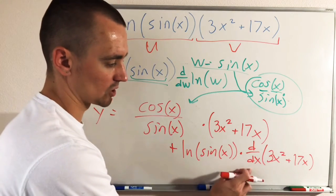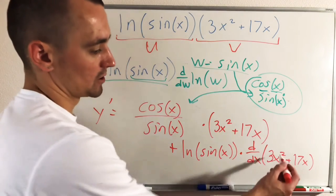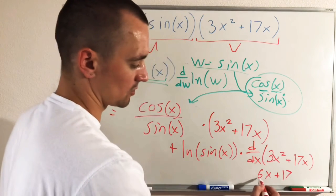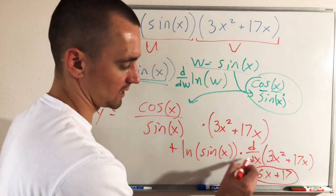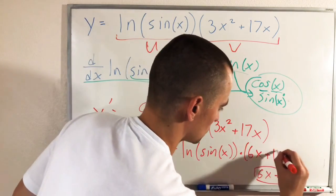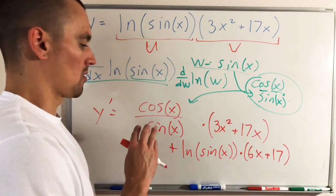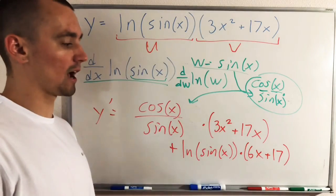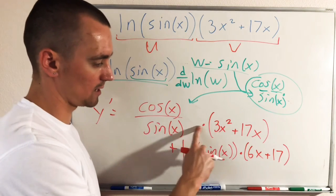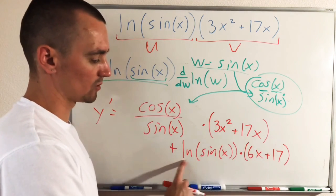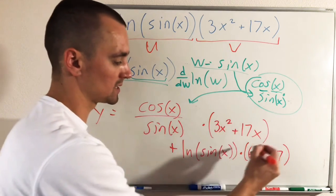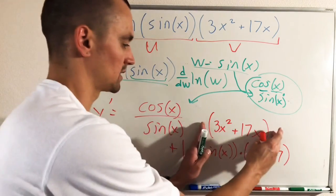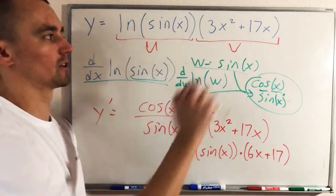The only remaining piece is the derivative of 3x squared plus 17x. Using the power rule, we bring the 2 down and lower the power by 1, giving us 6x, and the derivative of 17x is 17. So that term is 6x plus 17. The full derivative after applying both product rule and chain rule is: (cosine x / sine x) · (3x² + 17x) + ln(sin(x)) · (6x + 17). Make sure to use parentheses to properly group each term when multiplying.